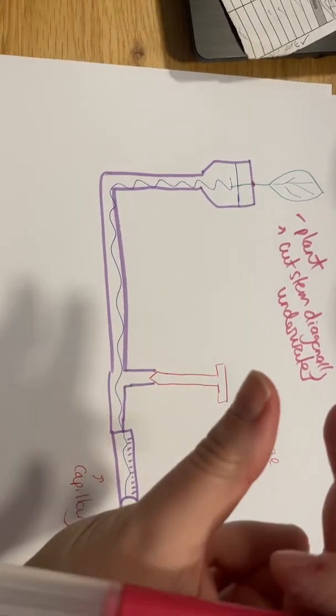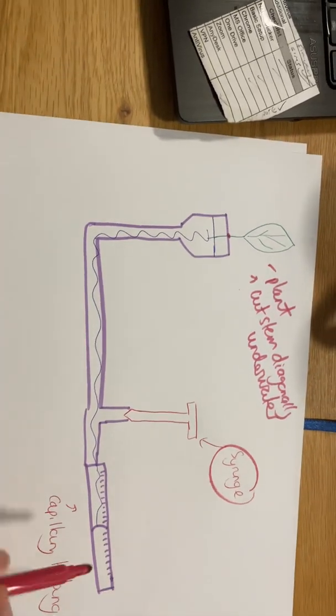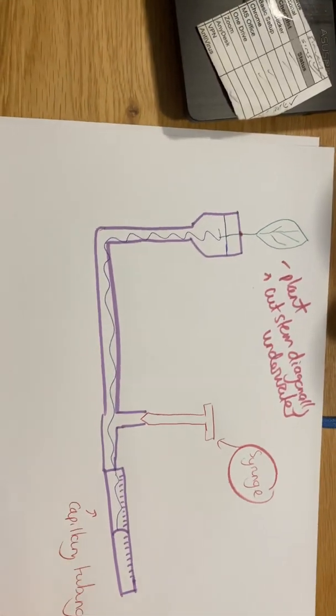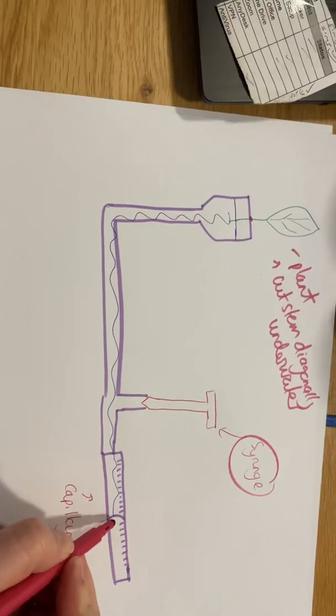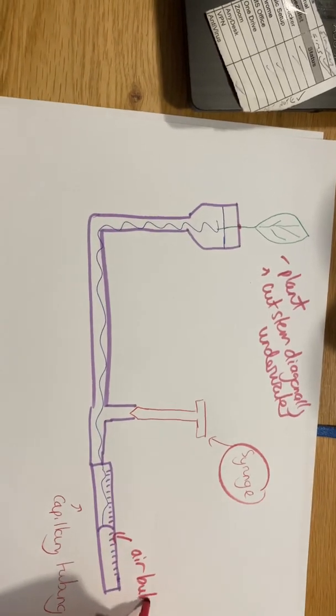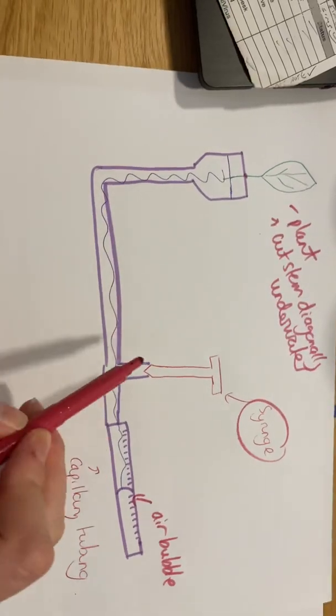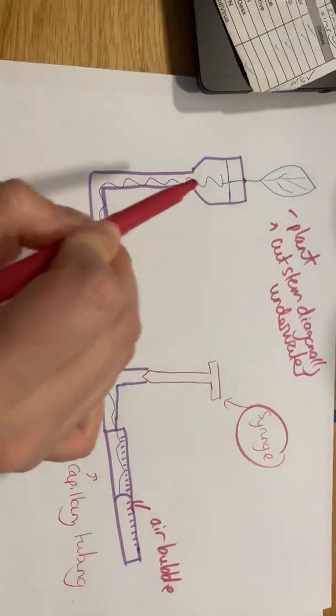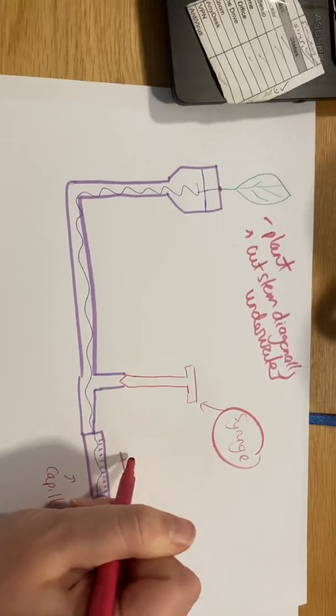Now why do we have a syringe? First of all, let's look at what's going to actually happen in the experiment. Here at the end, I have given myself a deliberate air bubble. That is the air bubble that we want and are interested in, because as my plant takes up water, the water is going to move in this direction towards the plant, and that means the air bubble is going to move in that direction towards the plant as transpiration happens.